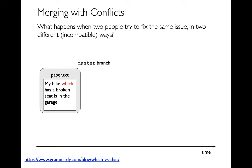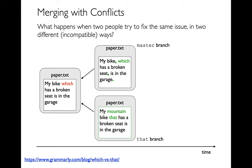The first thing we're going to start with is a sentence in our paper.txt that says: 'My bike, which has a broken seat, is in the garage.' I didn't really learn this grammar rule until graduate school, but using the word 'which' makes this a parenthetical that needs commas. If I change 'which' to 'that', I wouldn't need commas. Imagine two people working on this — one is on an airplane with no Wi-Fi — and they both see this problem.